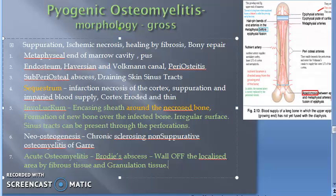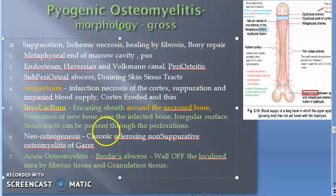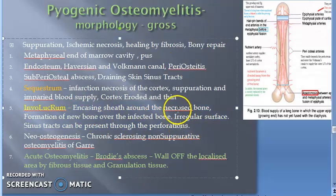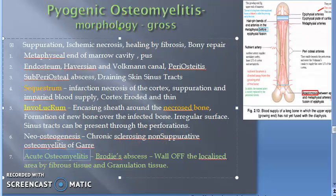In sequestrum, it is only necrotic tissue — it is not going to have any wall-off. In Brodie's Abscess there is a wall-off. Involucrum is around the sequestrum, but it has perforations which allow sinus drainage. So involucrum is not as favorable as Brodie's Abscess.